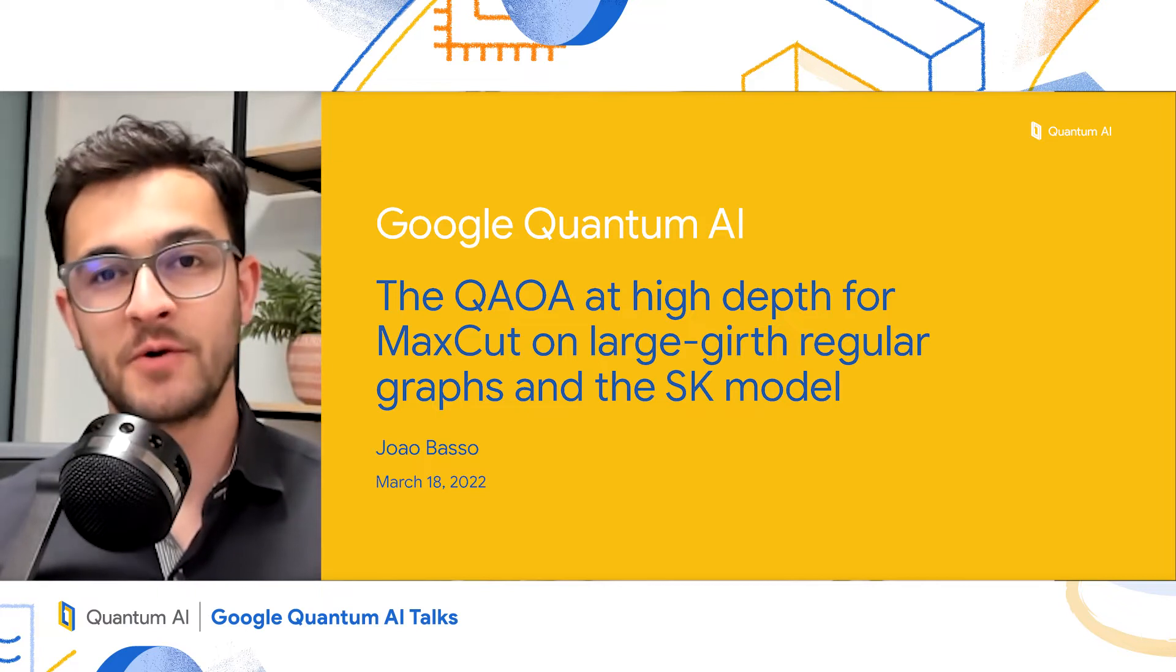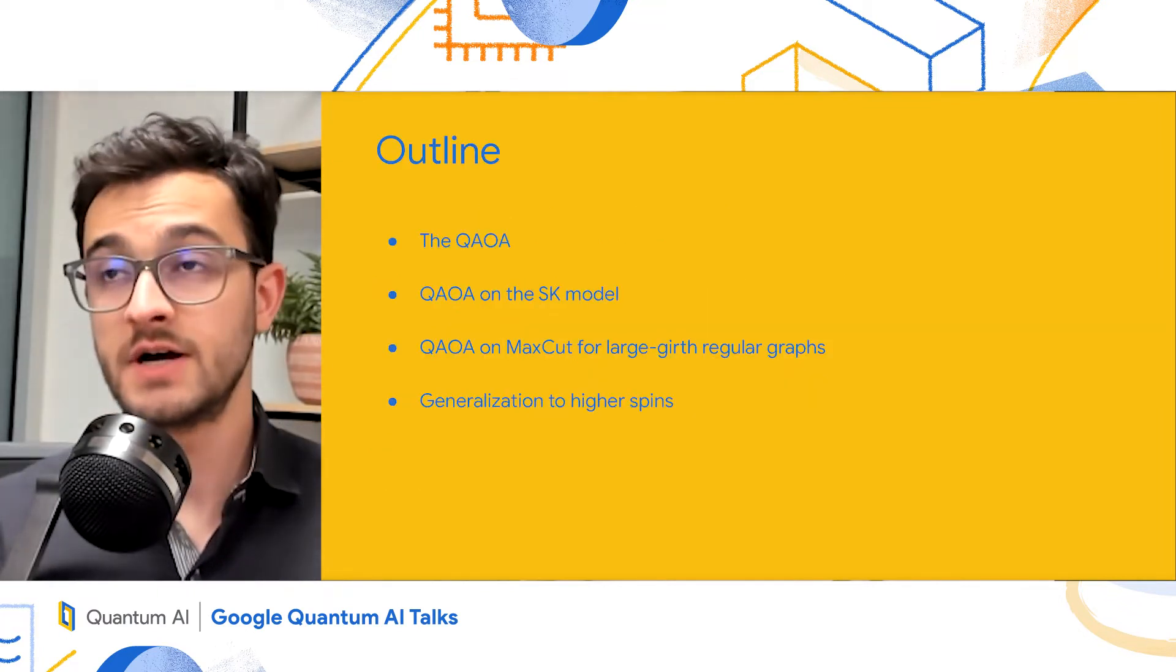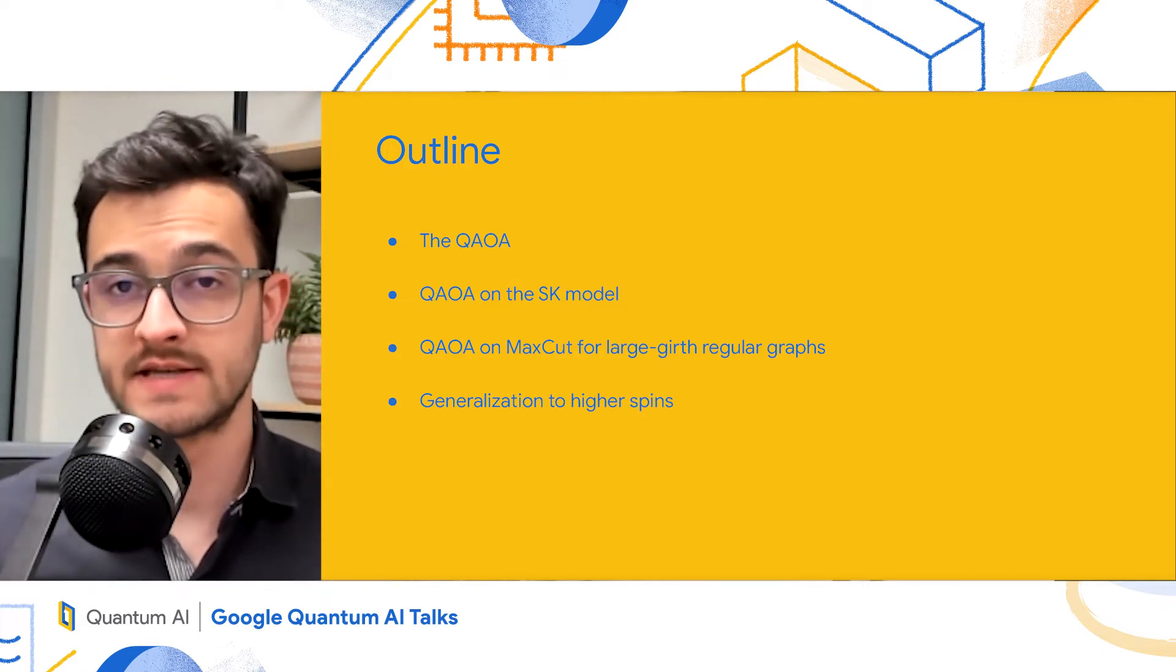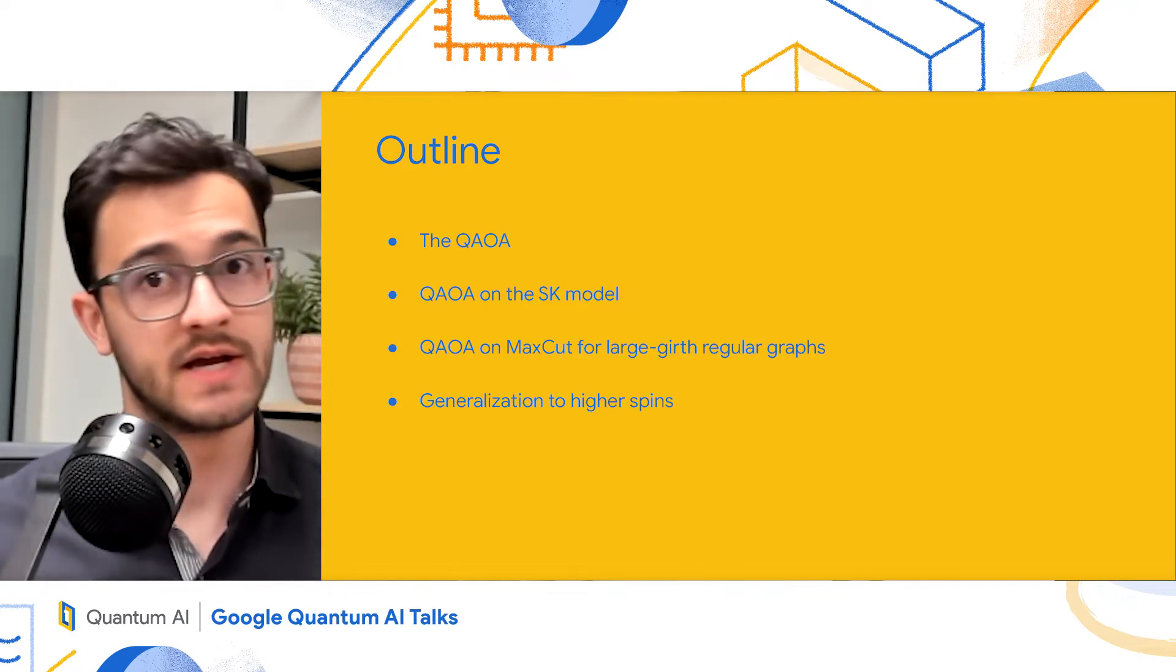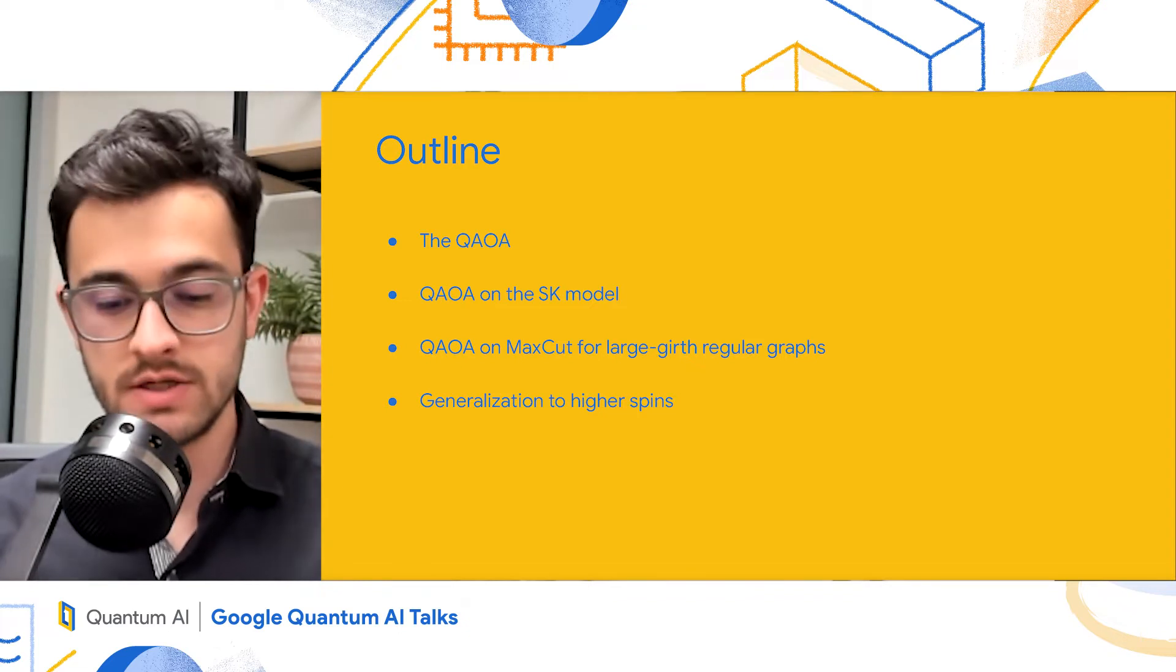Hello, I'm João Basso, and I'm going to tell you about some progress on quantum optimization. As an outline for the talk, I'm going to talk about the QAOA, apply it to the SK model, apply it to MaxCut on large-girth regular graphs, which will turn out to be connected to the SK model, and then we'll generalize the results to higher Q-spins.